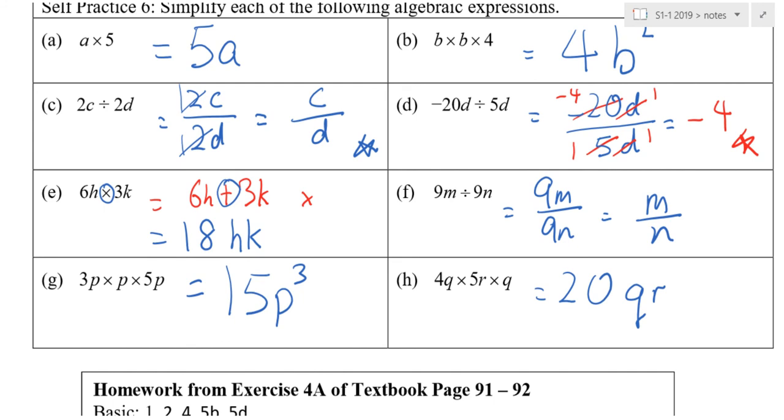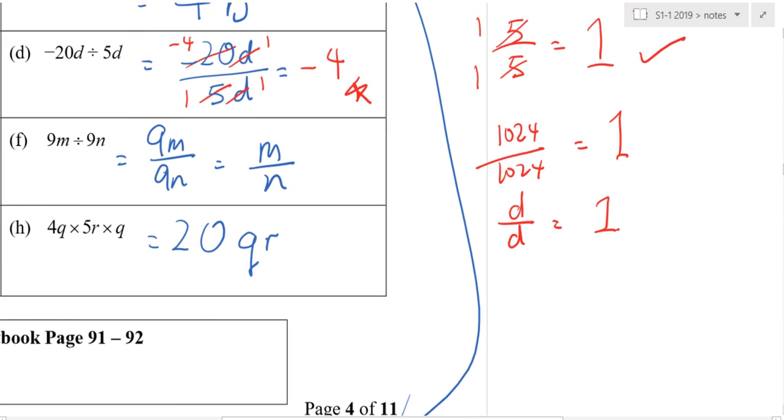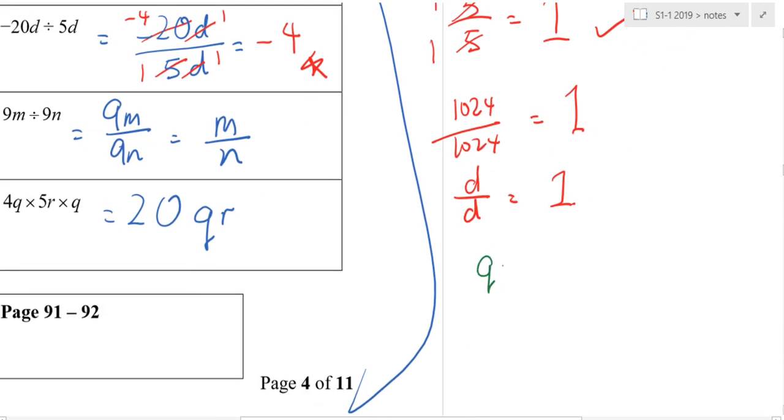So, can you write down, Ahmed? Q times Q is equal to Q squared. Q plus Q is equal to... Ahmed, Jamie, stop talking. Q plus Q is equal to 2Q. So you see the difference?